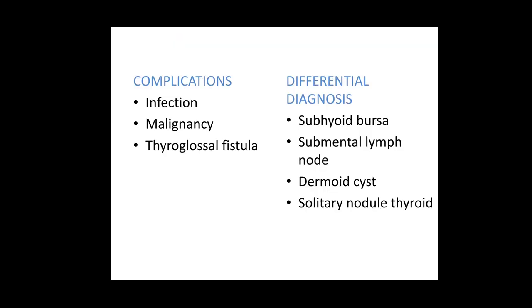Complications include infection and malignancy. As the cyst may contain thyroid tissue, papillary carcinoma of the thyroid is one malignancy that can develop. Additionally, it can form a thyroglossal fistula if it ruptures, if an incision and drainage is done, or if surgery is performed inadequately and tissue is left behind, resulting in an acquired thyroglossal fistula.